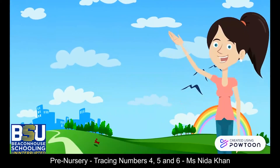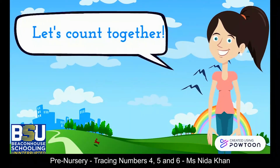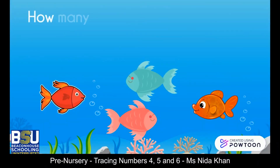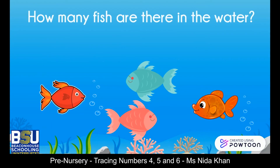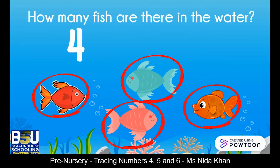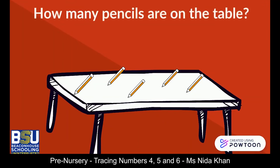Now let's count together. How many fish are there in the water? One, two, three, four — there are four fish! So the next question is: how many pencils are on the table?